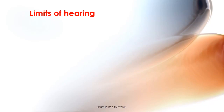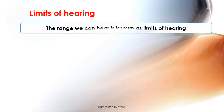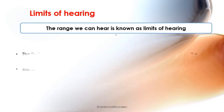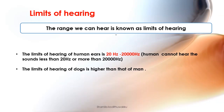The range we can hear is known as the limits of hearing. The limits of hearing of the human ear is 20 Hertz to 20,000 Hertz. Humans cannot hear sounds less than 20 Hertz or more than 20,000 Hertz.